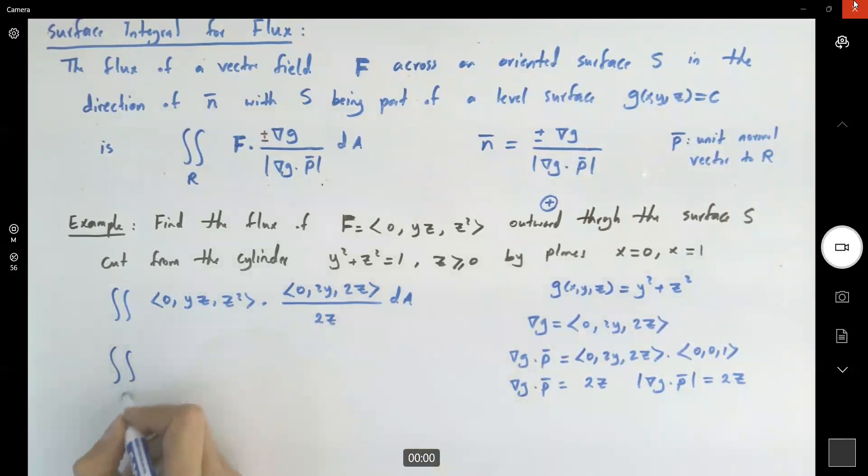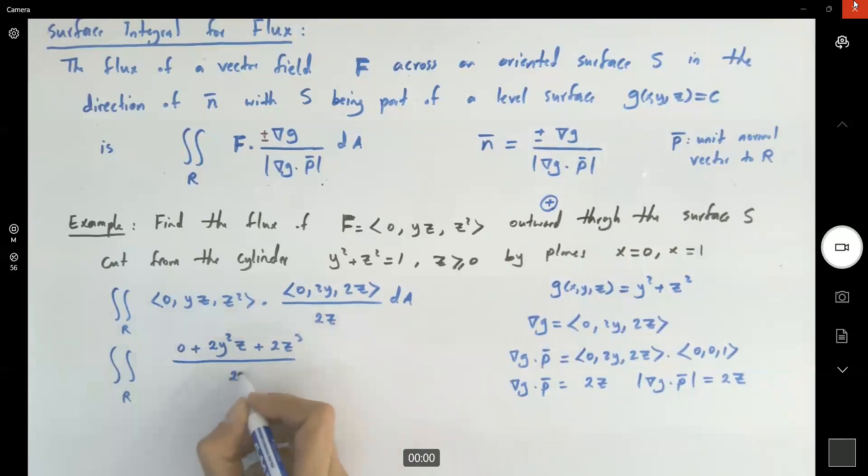The flux equals the double integral over region R of (0 + 2yz + 2z³) divided by 2z dA. Doing the division, we get the double integral over R of (y² + z²) dA.